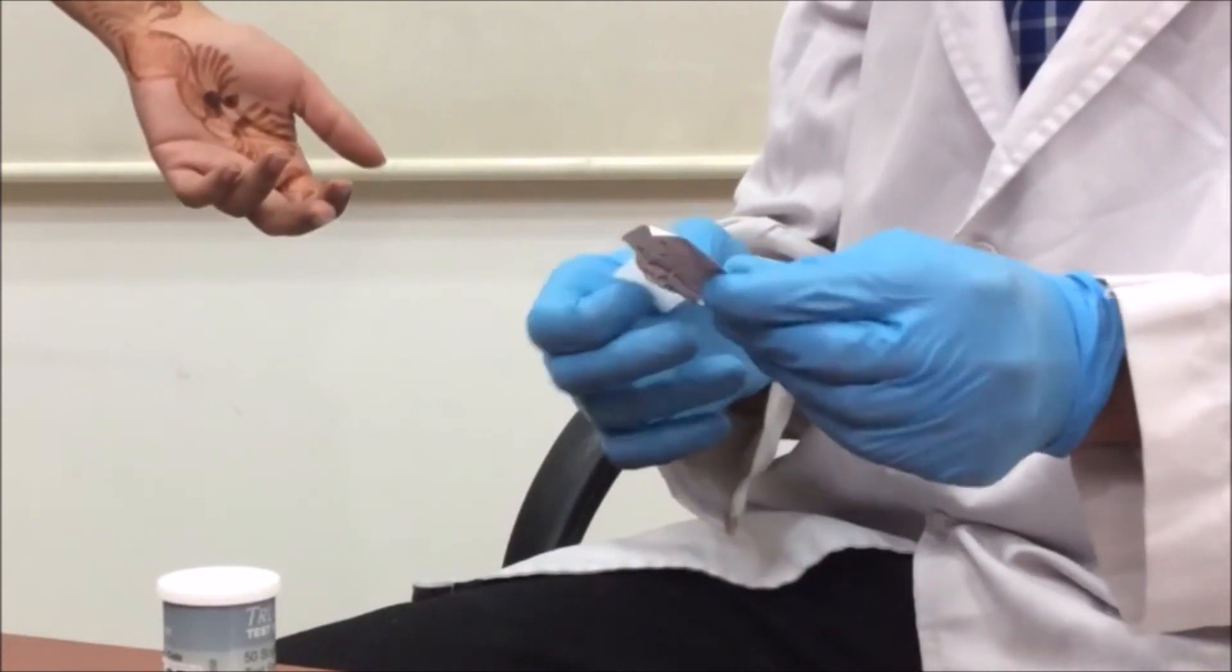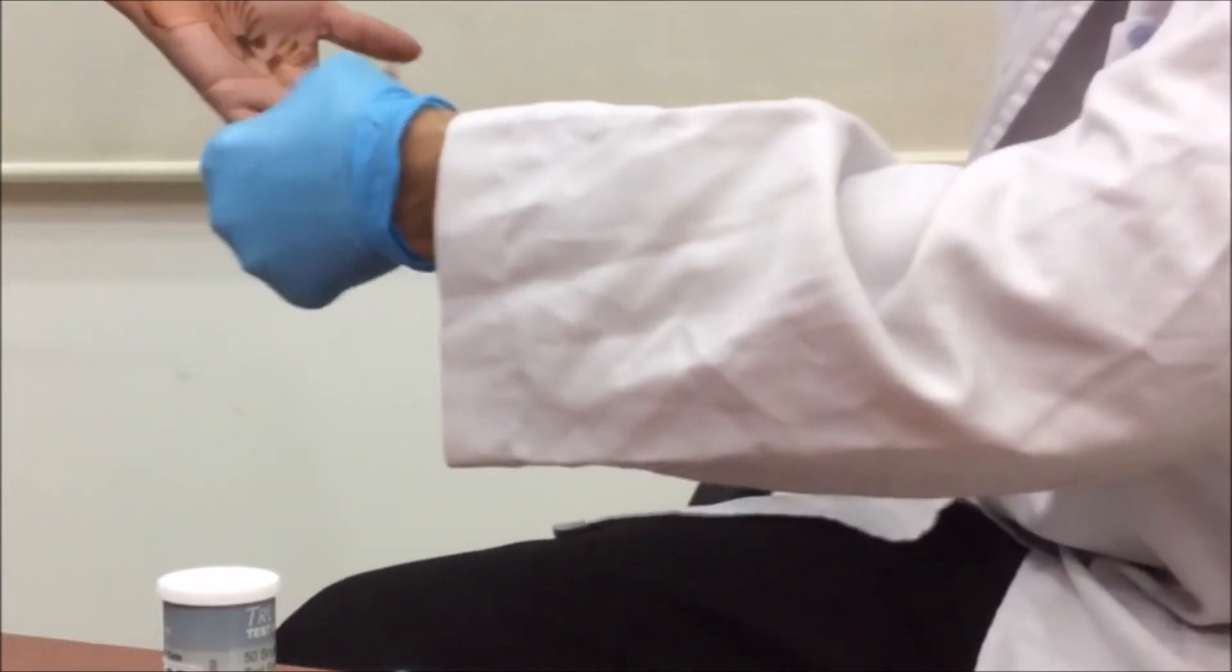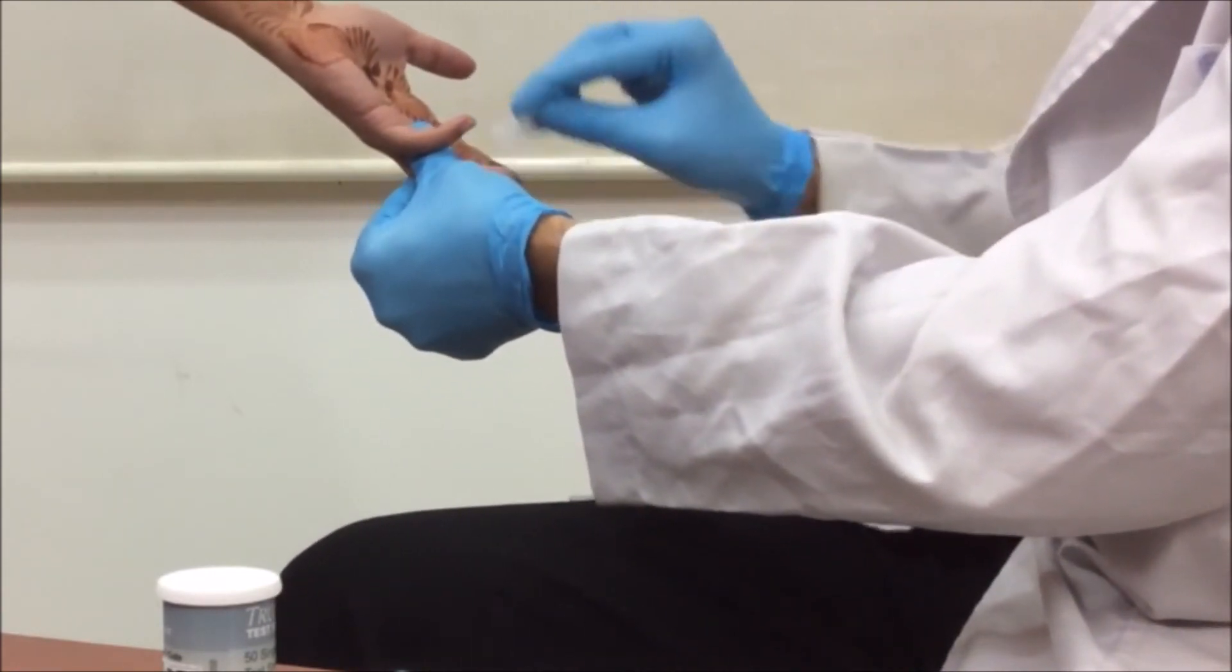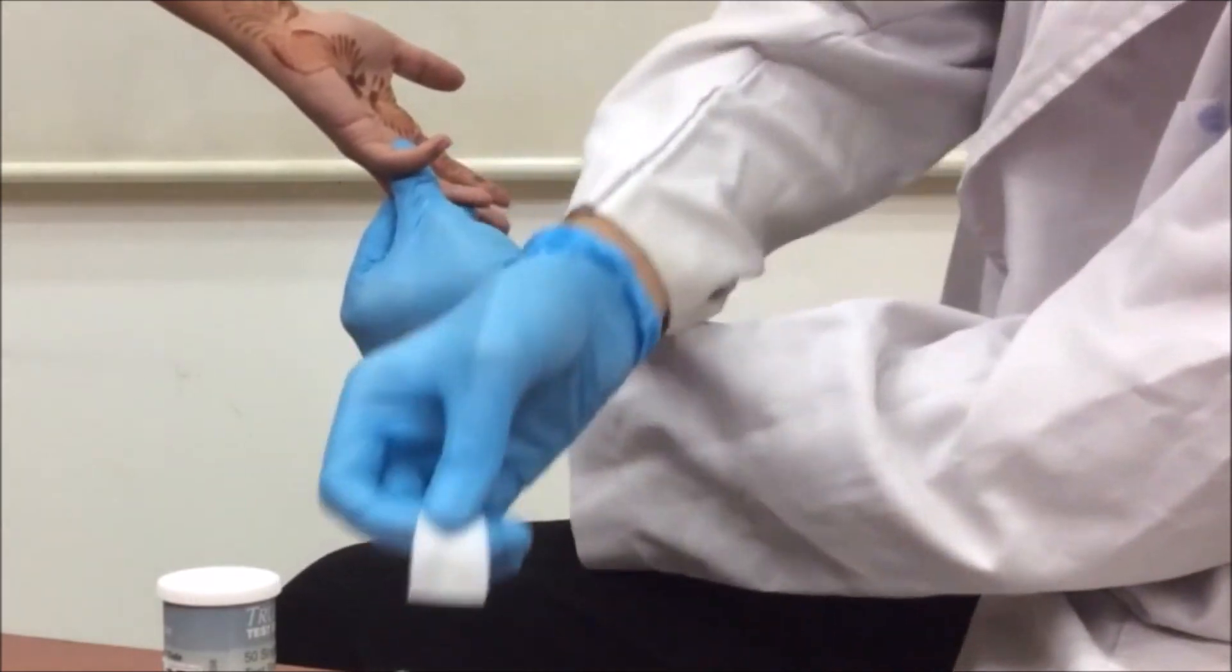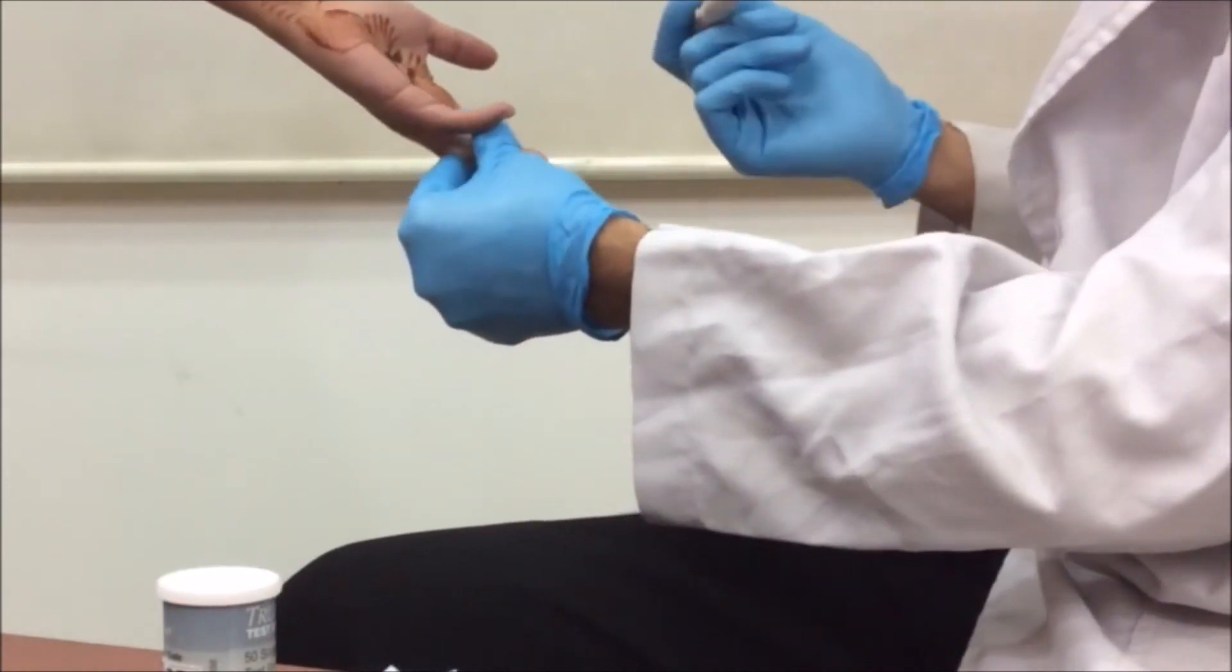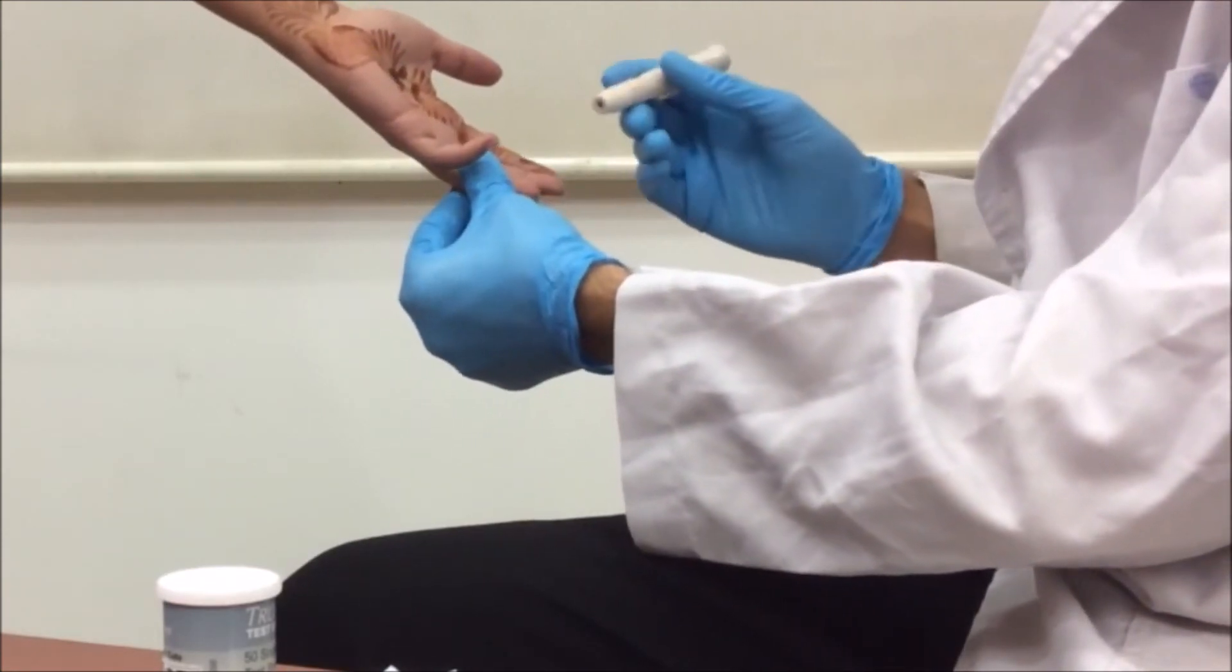Take the left hand of the patient and wipe it properly with the swab. Advise the patient to keep the hand warm and loose. Now keep the lancing device on the ring finger and prick it.